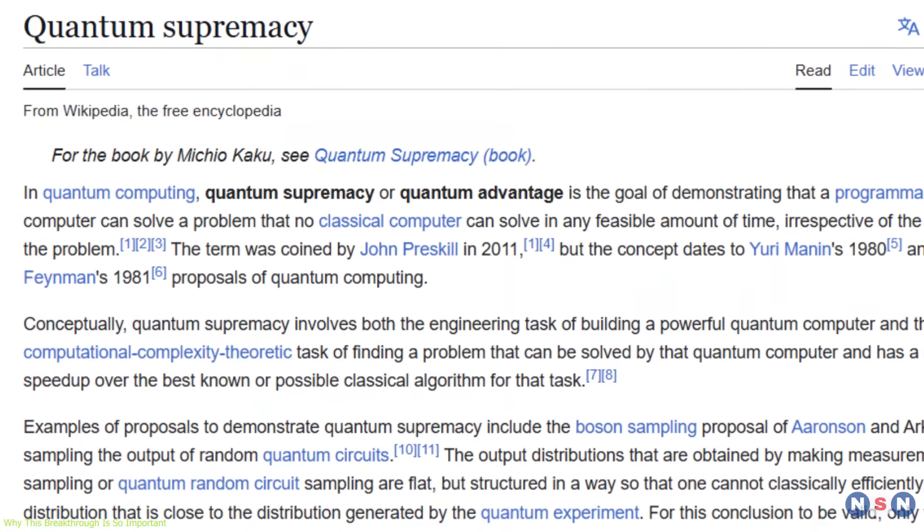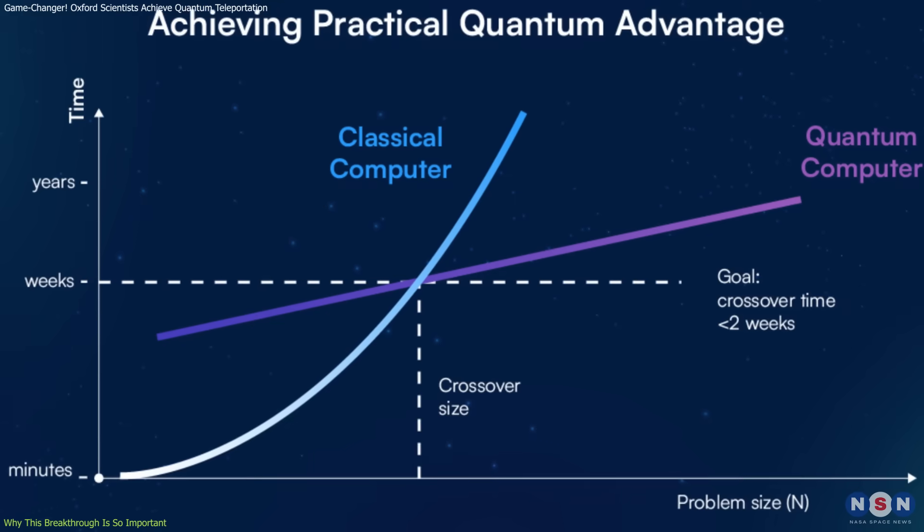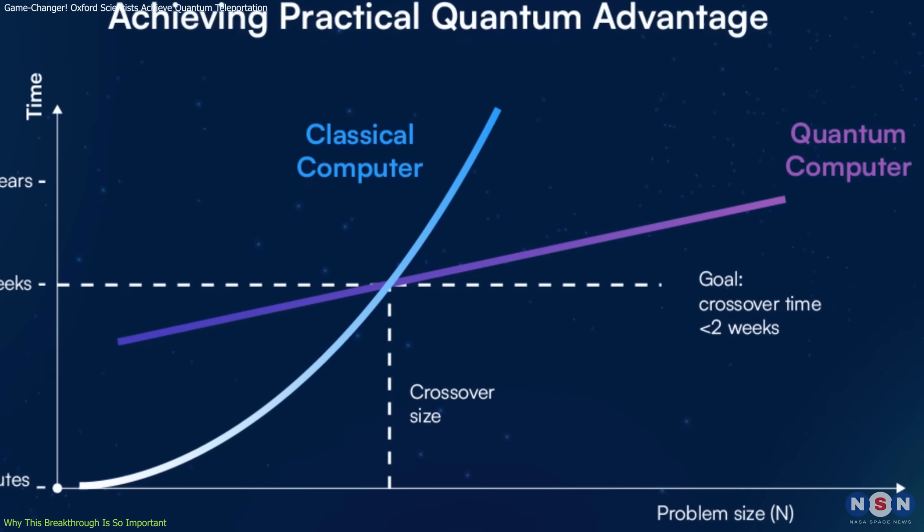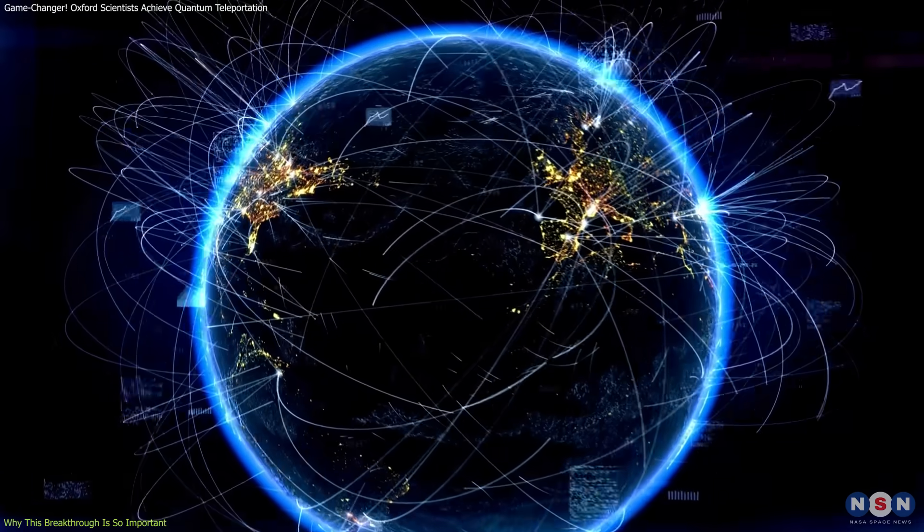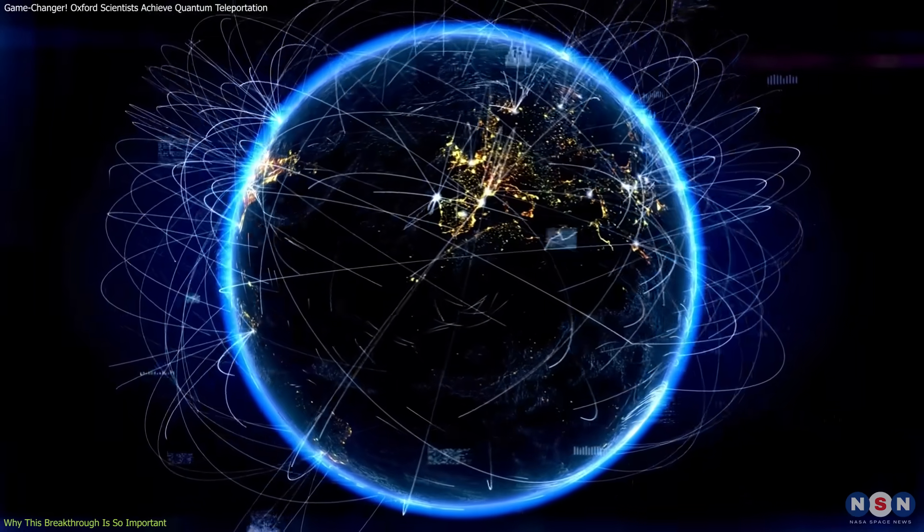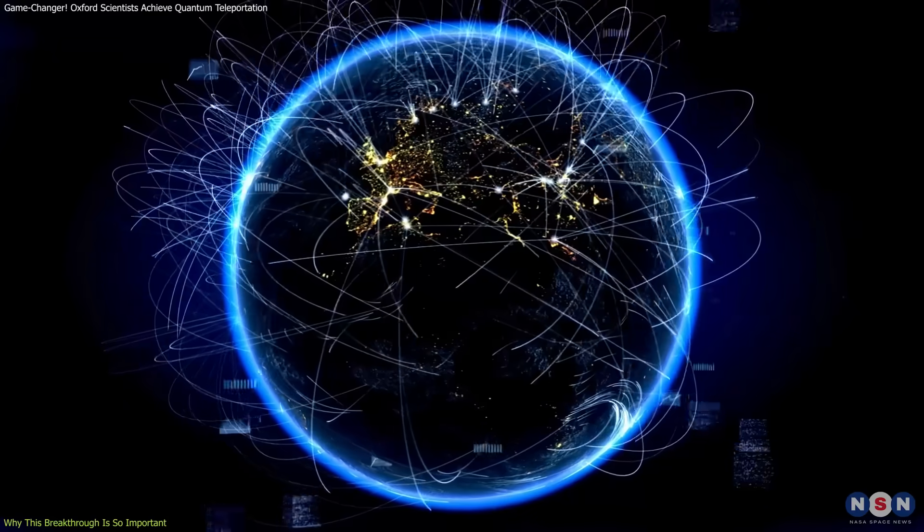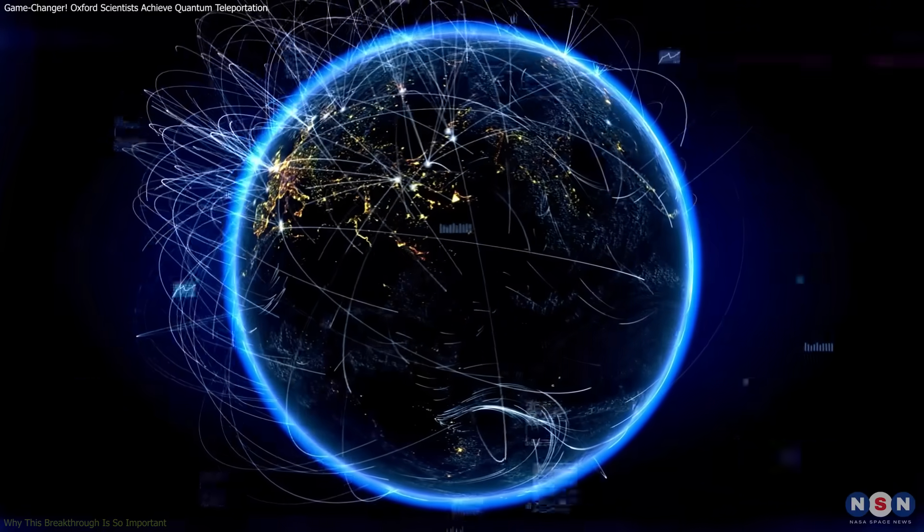While quantum supremacy, the point at which a quantum computer outperforms the best classical supercomputers, has been demonstrated in specific cases, this development moves us toward real-world usability, where quantum computers will tackle problems classical machines never could.